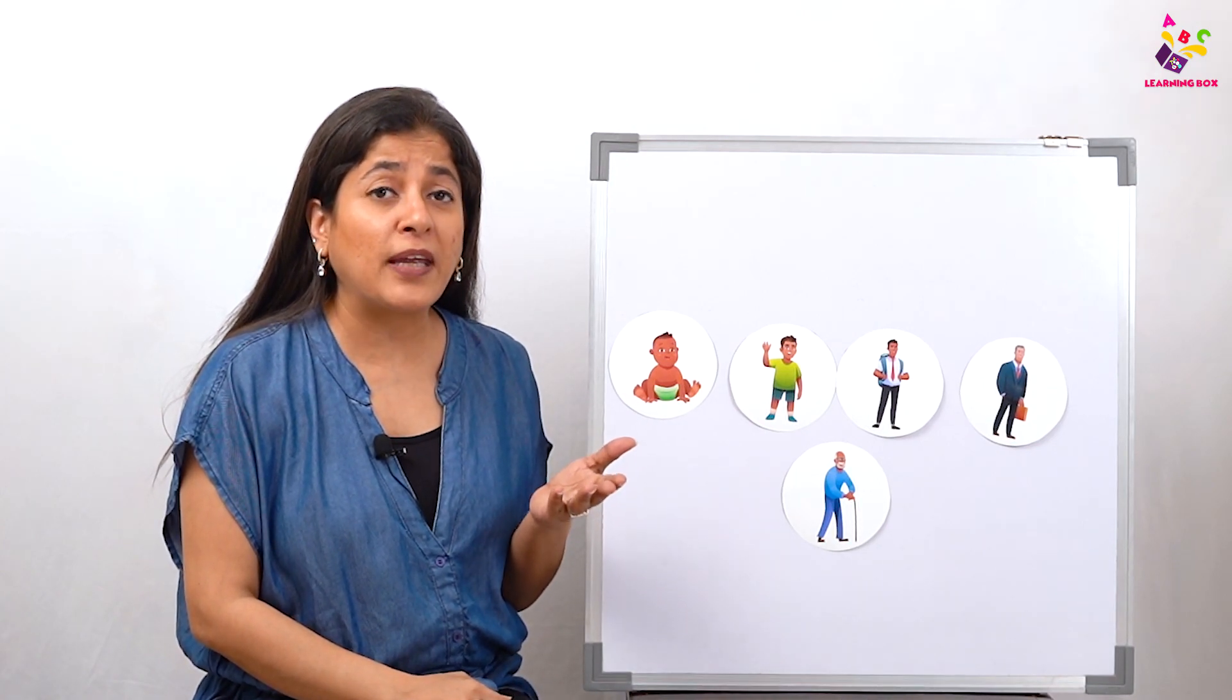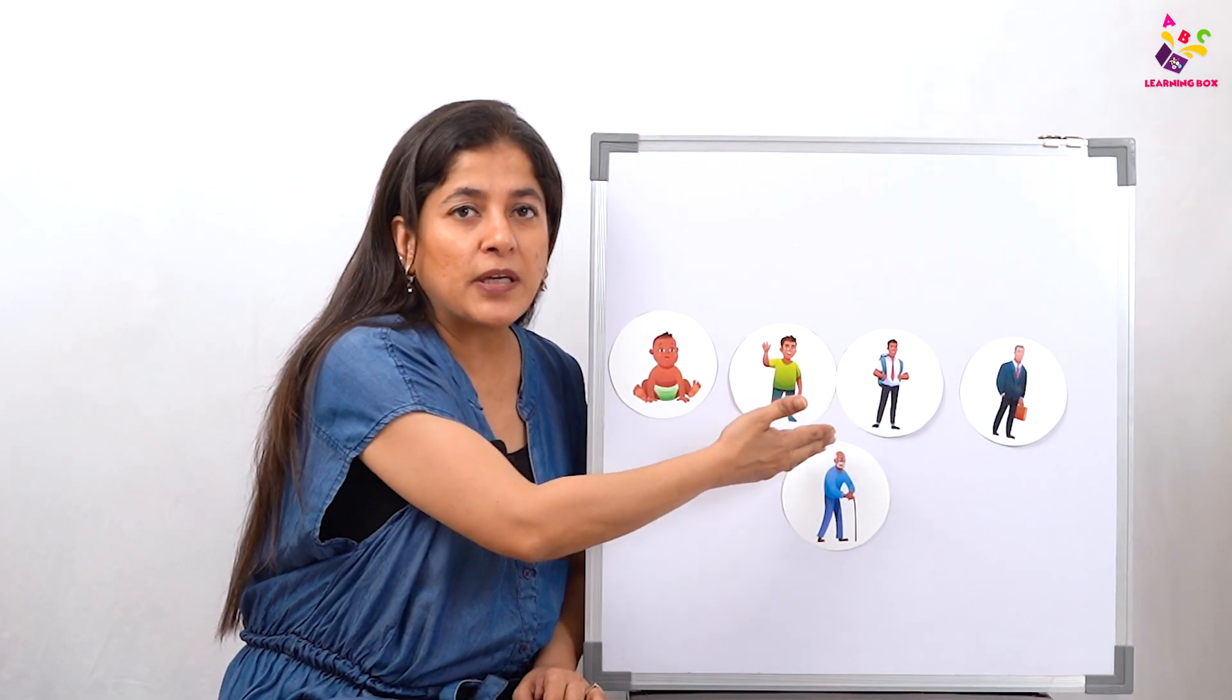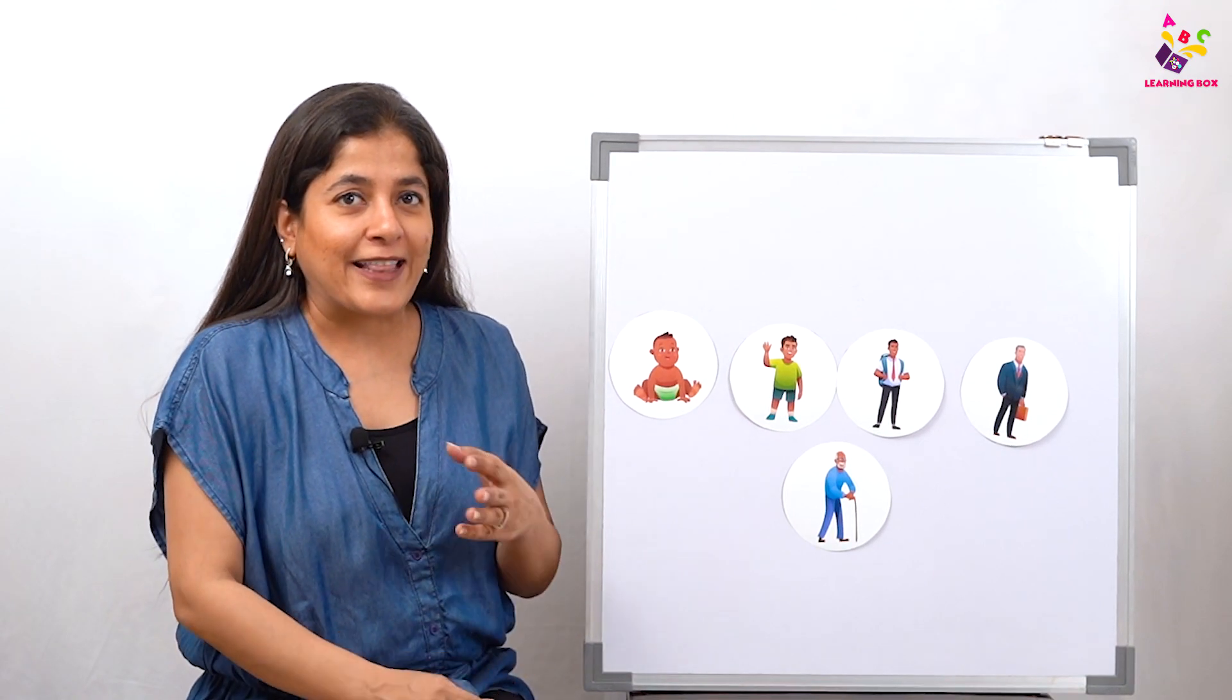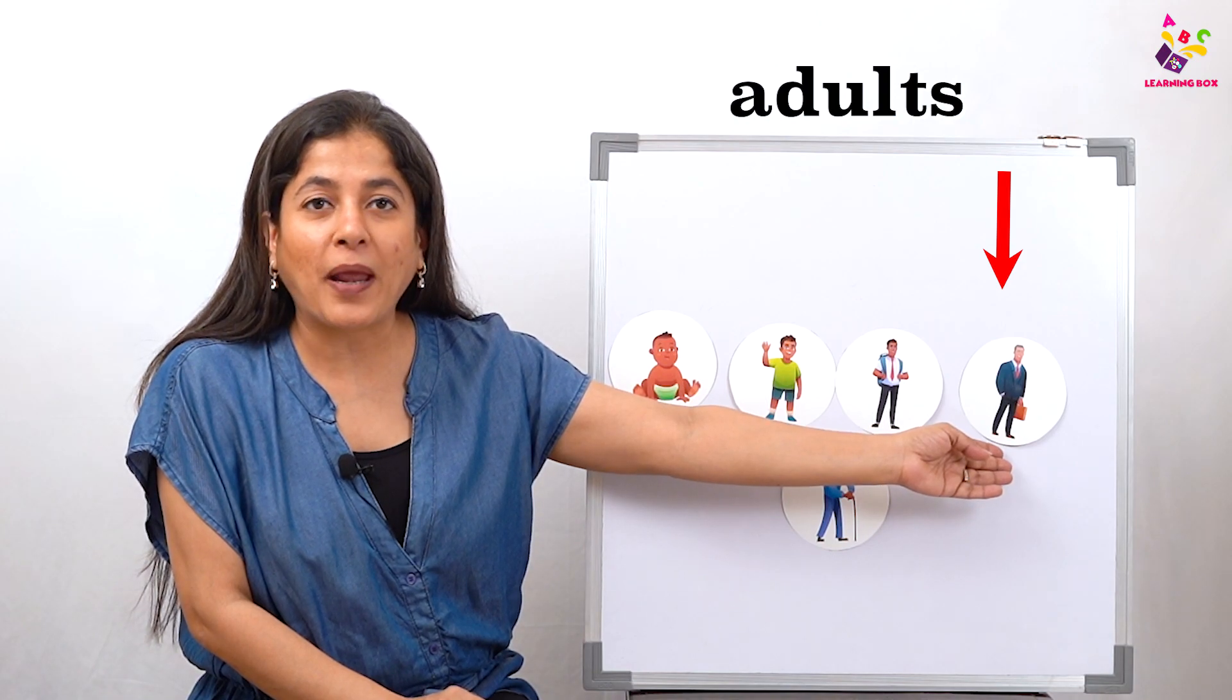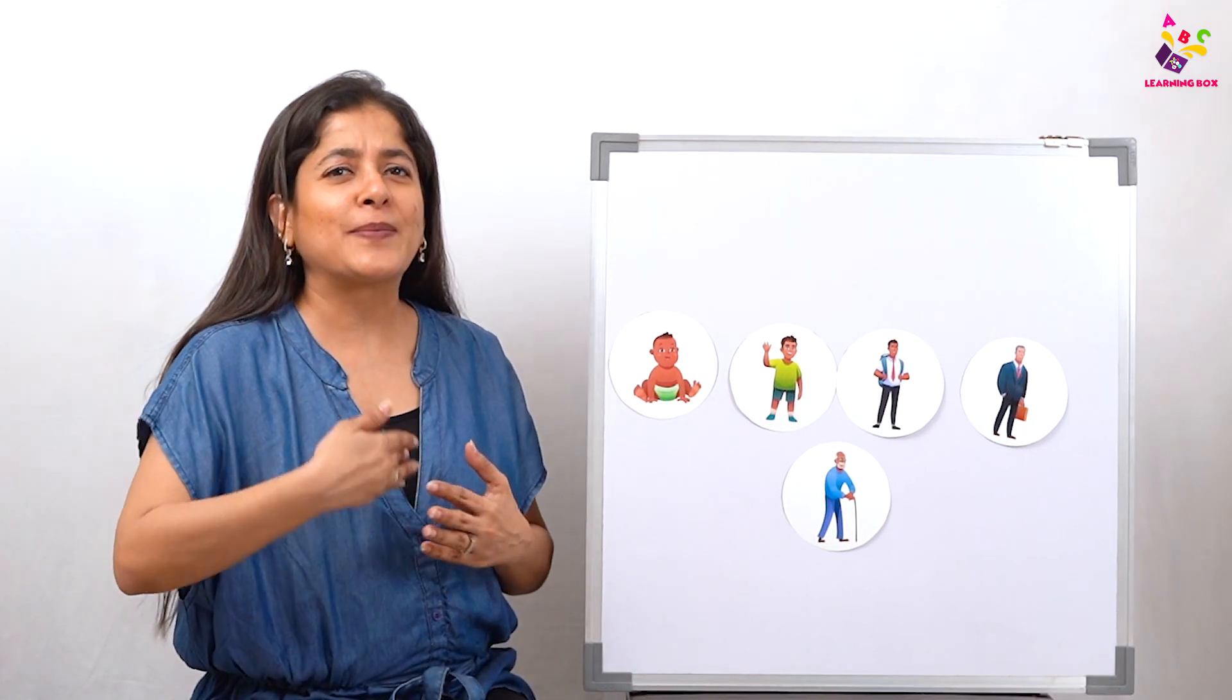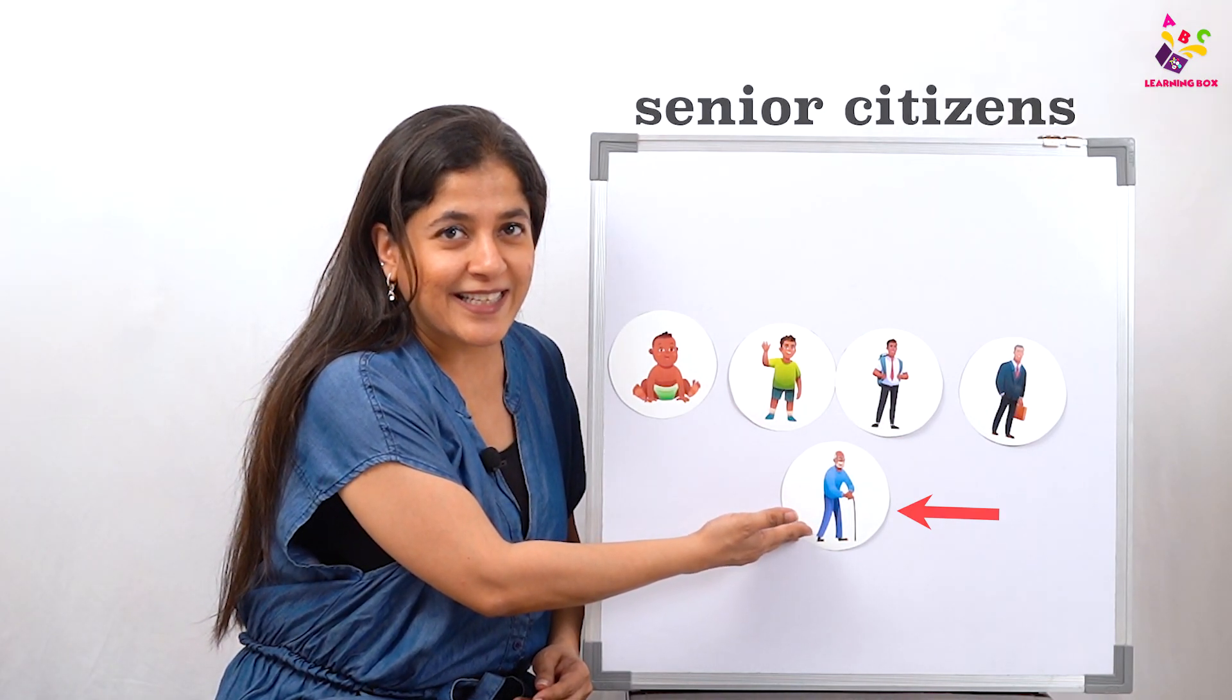That's when we get serious about our studies and think about what work we are going to do as we grow up. Then we become adults who go to office and start making a family. We get married, we have our own babies. As we grow older and older, we are called senior citizens.